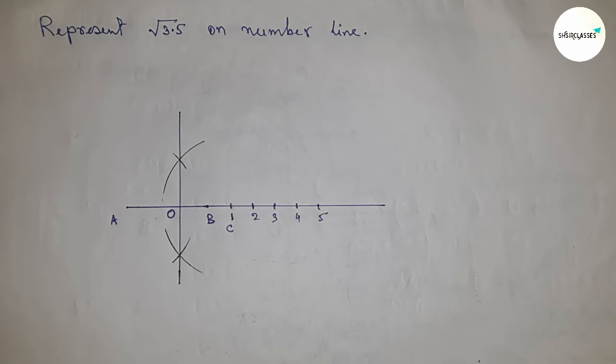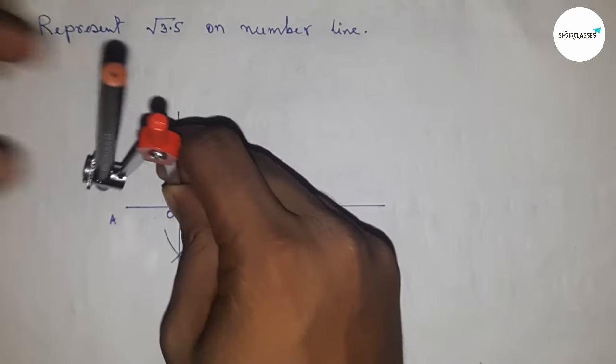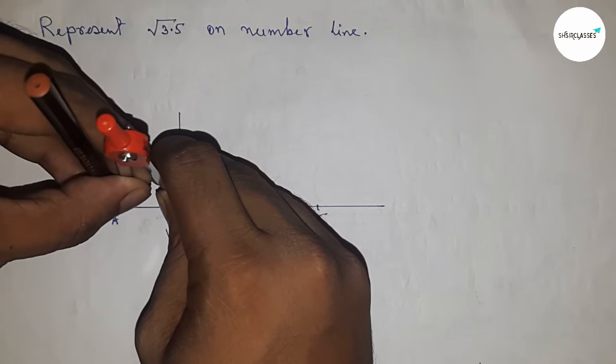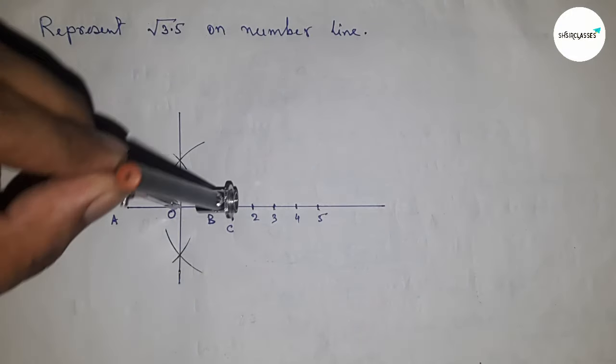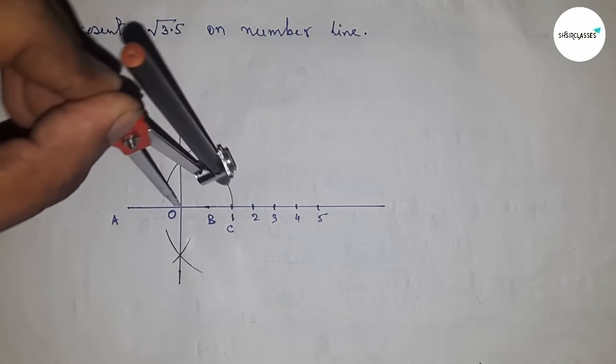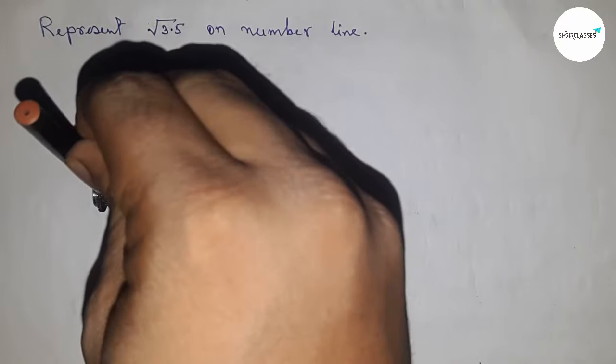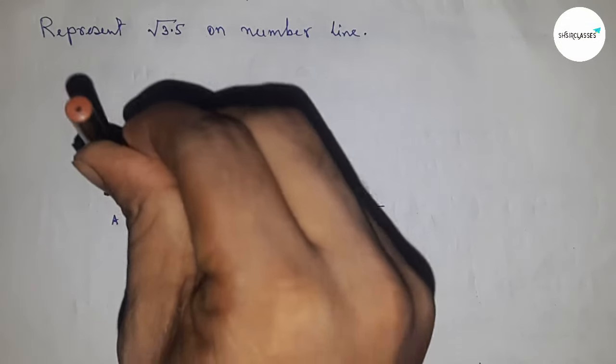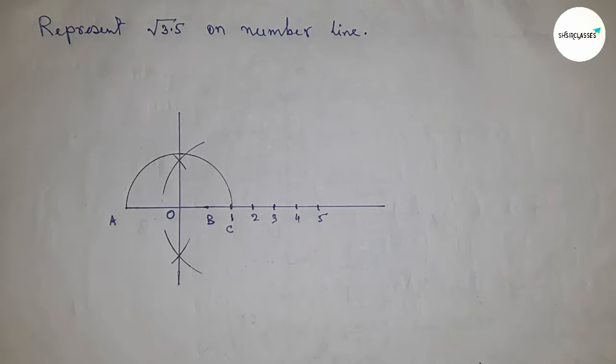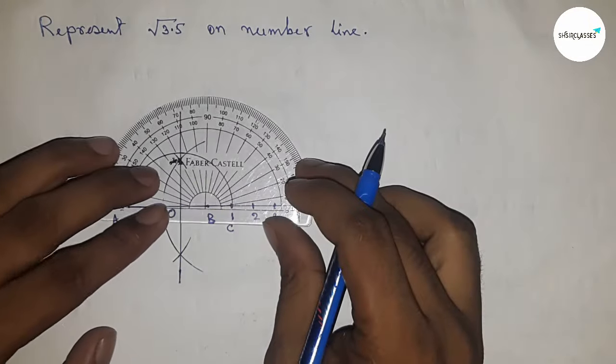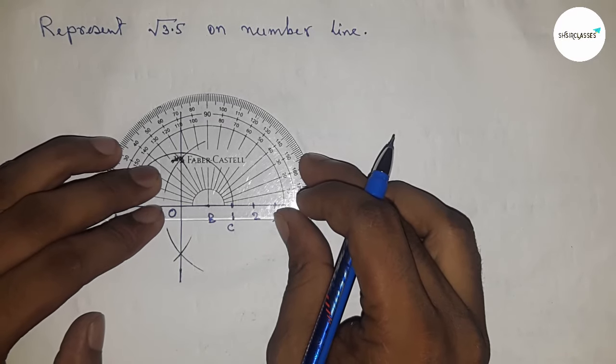The line AC bisects at point O. Next, take the length OA and OC and draw a semicircle.